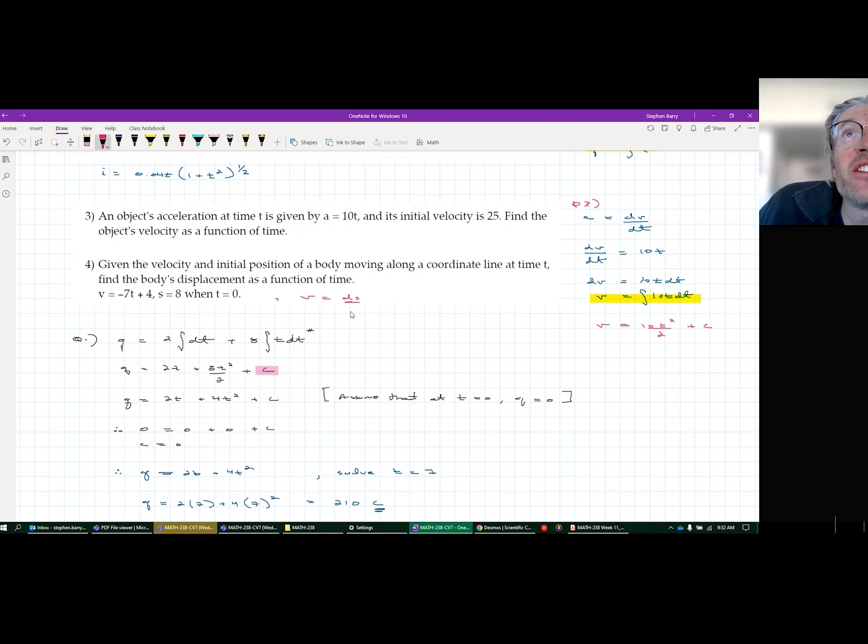If velocity is the change in position over time, this I find is the hard part. Then you say, okay, therefore DS is velocity times DT. Then you take your integral. Velocity is 5T squared plus C. And then you have to go, right? So that's the first step to setting it up.